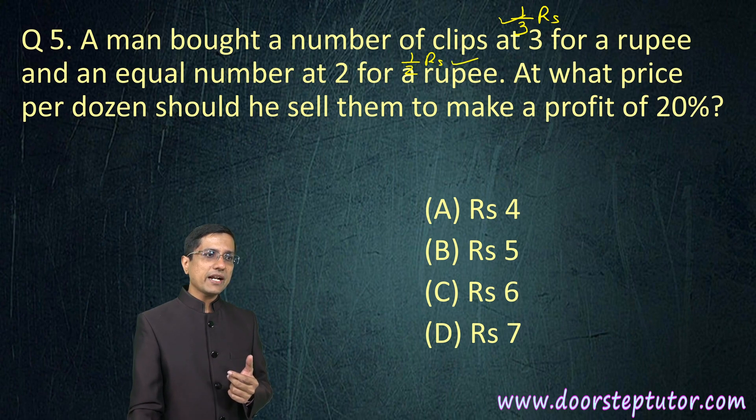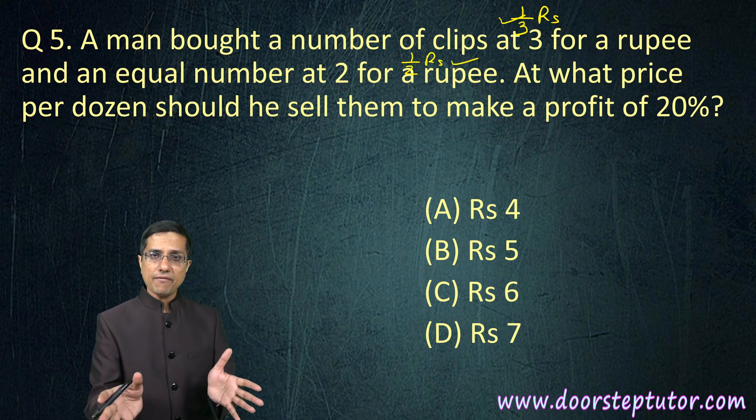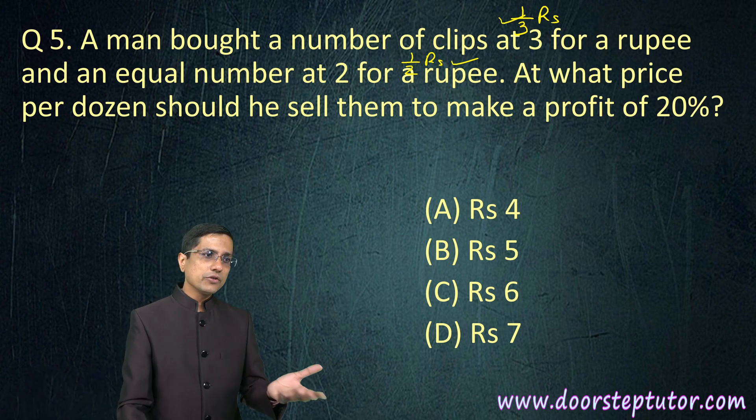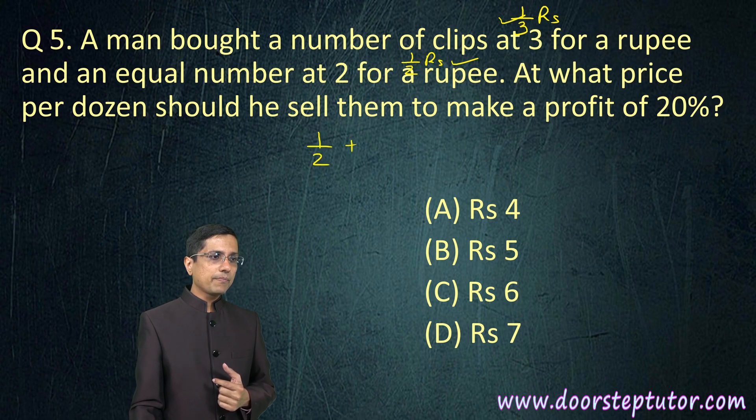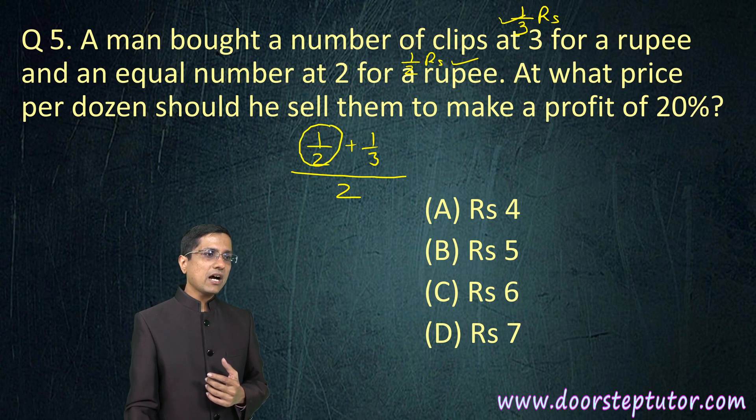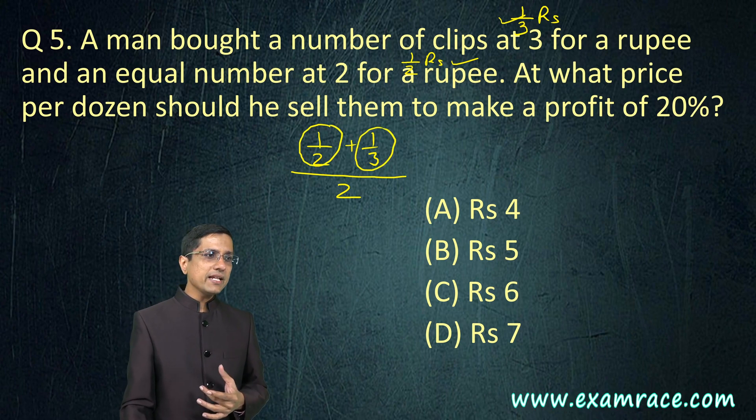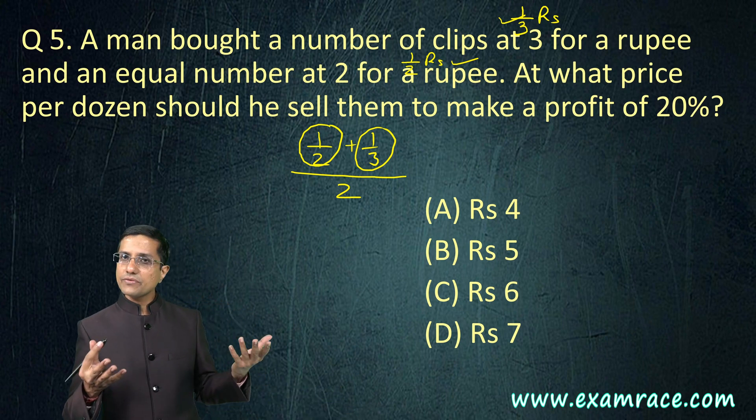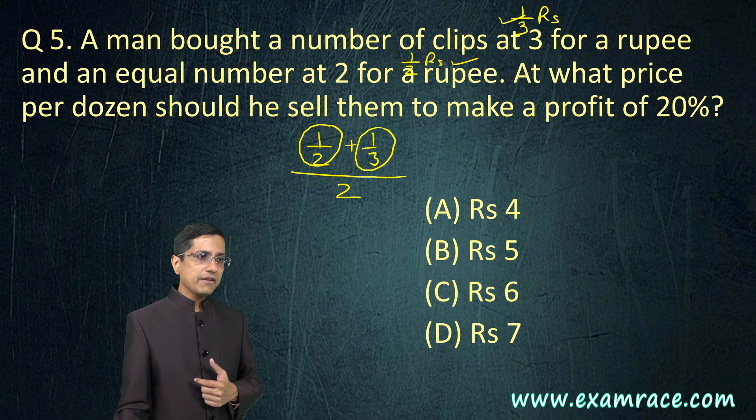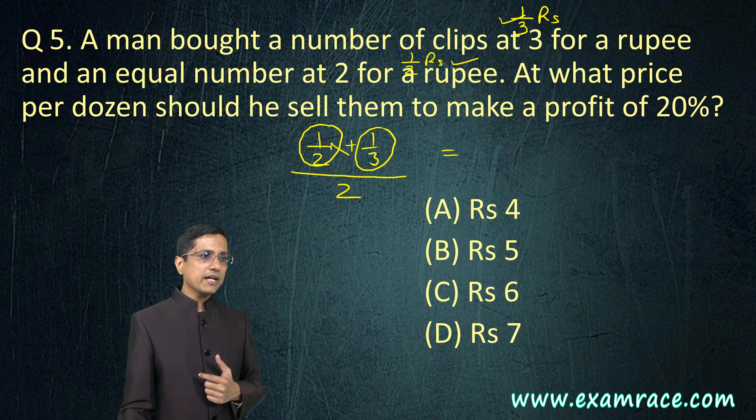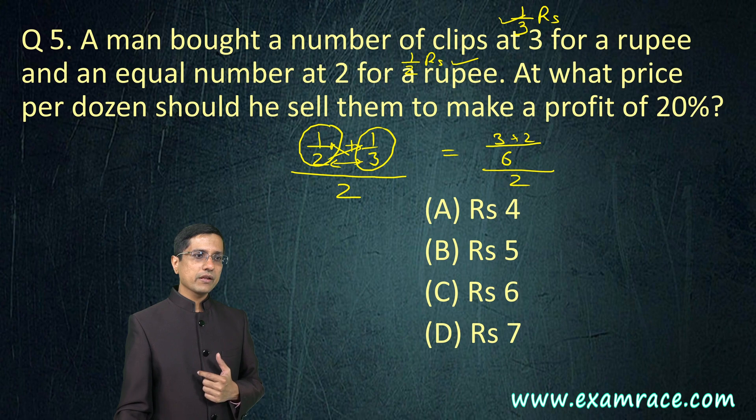What is the average cost of a clip? It is half plus 1 by 3 divided by 2, because half of the clips have been bought at this rate, half at this rate. Therefore their average would be half plus 1 by 3 divided by 2. If you calculate it this comes out to be: 3 would go here, 2 would go here, then we multiply, this becomes 6. So 3 plus 2, this becomes 5 by 6 divided by 2 which equals 5 by 12. That is the average cost per clip.